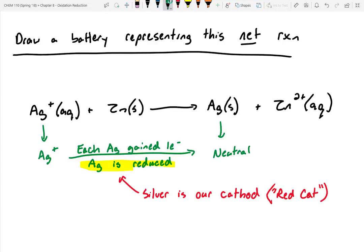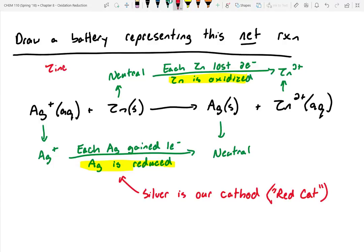All right conversely we can go ahead and take a look at zinc. Zinc up here was neutral. And then zinc over here is already given as two plus. So it looks like each zinc lost two electrons. That means that zinc is oxidized. So I'm going to highlight this. Conversely we know that this means that zinc must be our anode. All right does that make sense? Kind of keeping track of it this way.